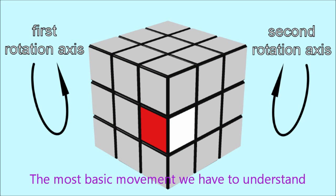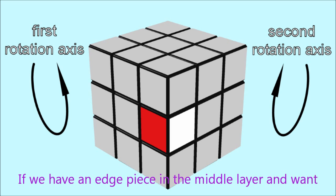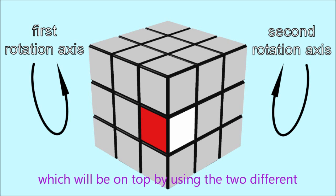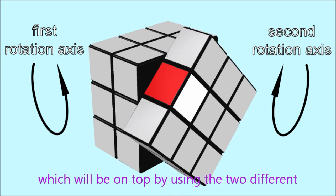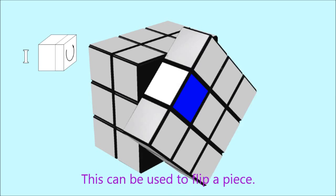The most basic movement we have to understand is flipping the face. If we have an edge piece in the middle layer and want to move it to the top, we can choose a sticker which will be on top by using two different rotation axes. This can be used to flip the piece.